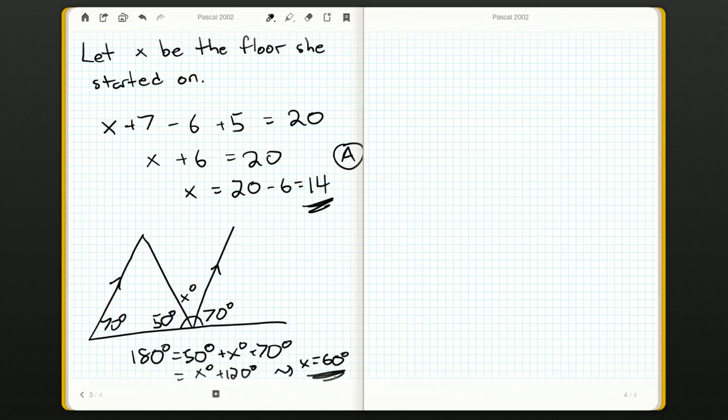Okay, 60 degrees was one of the answers. It was B. All right. So we would bubble in B, and we would then move on to question number seven.